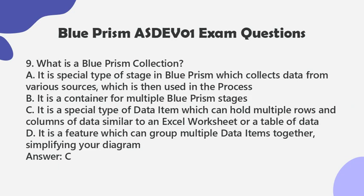Question 9: What is a Blue Prism collection? a. It is a special type of stage in Blue Prism which collects data from various sources, which is then used in the process. b. It is a container for multiple Blue Prism stages. c. It is a special type of data item which can hold multiple rows and columns of data, similar to an Excel worksheet or a table of data. d. It is a feature which can group multiple data items together, simplifying your diagram. Answer: C.